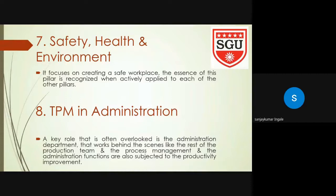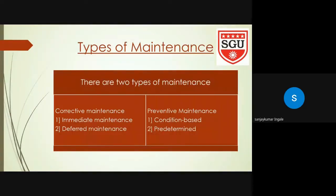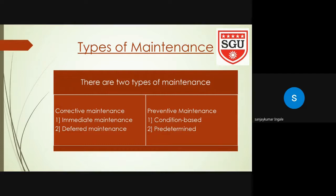There are basically two types of maintenance: corrective maintenance and preventive maintenance. Corrective maintenance is implemented right after a defect has been detected on a piece of equipment or production line. Preventive maintenance is aimed at catching or fixing the problem before it happens. Under corrective maintenance there are two subtypes — immediate and deferred — and under preventive maintenance there are also two subtypes — condition-based and predetermined.